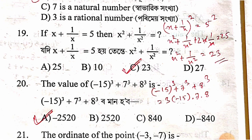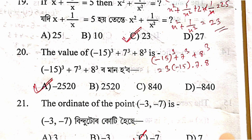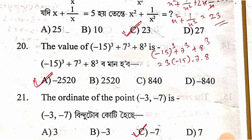The value of (−15)³ + 7³ + 8³: since a + b + c = −15 + 7 + 8 = 0, by the identity a³ + b³ + c³ = 3abc when a+b+c=0, the answer is 3 × (−15) × 7 × 8 = −2520.